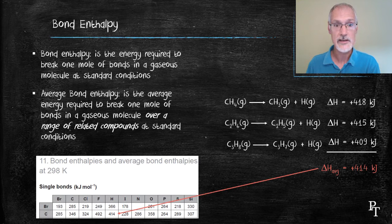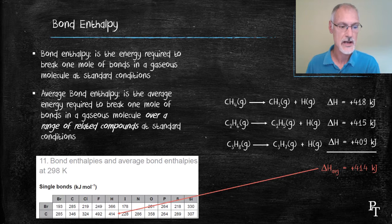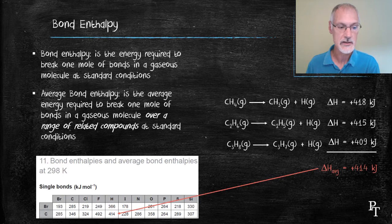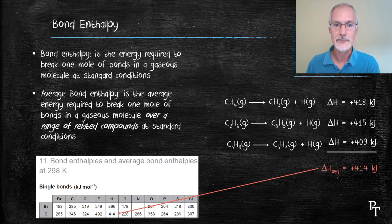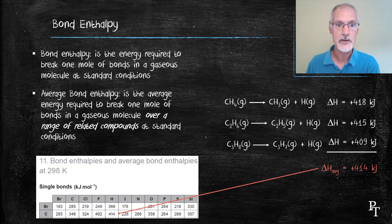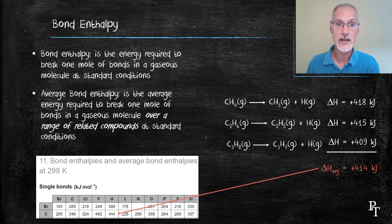The IB data booklet has examples of both bond enthalpy, which would be in the case of something like bromine bonded to bromine, or chlorine bonded to chlorine. But it also has average bond enthalpies, as shown here, 414 kilojoules for the carbon hydrogen bond. Be careful when you use this particular table because it has both single bonds and multiple bonds.